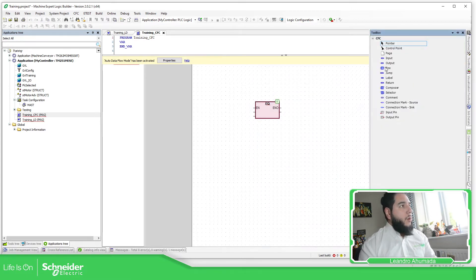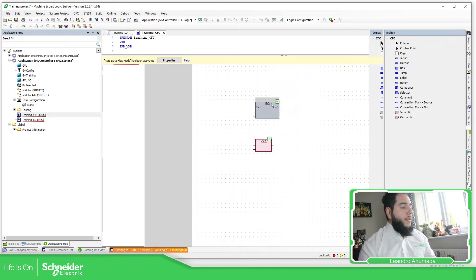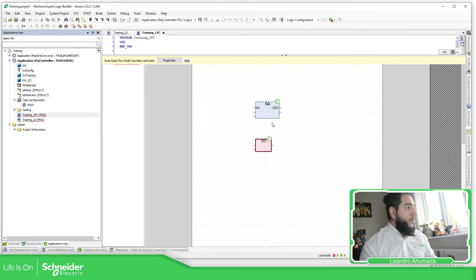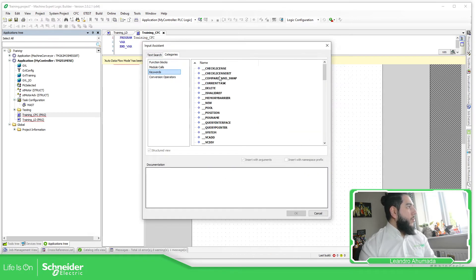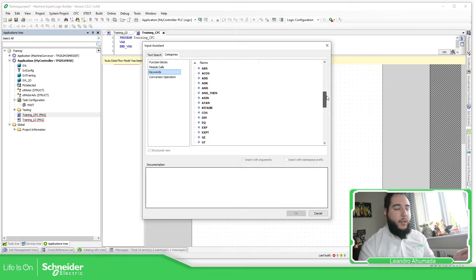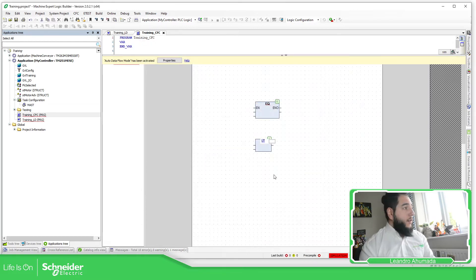And if you don't know the name of the function blocks, what you can do is to click on these question marks, this over here, and you have keywords. Here in the keywords, you have more functions. But you can find here, EQ equal, greater equal, greater than, less equal, less than. So this is information that you can find over here.